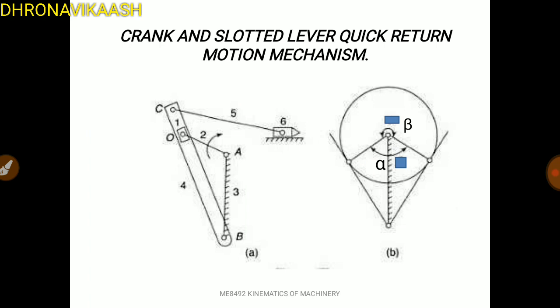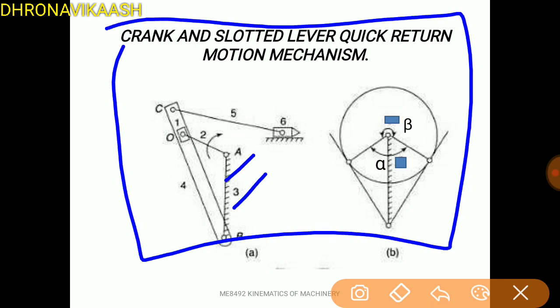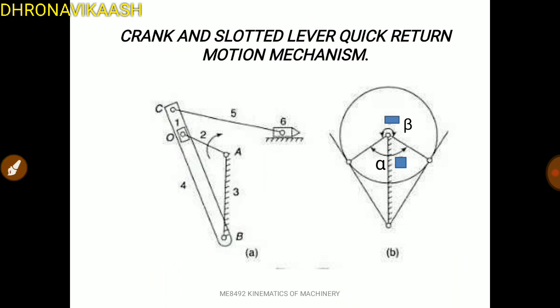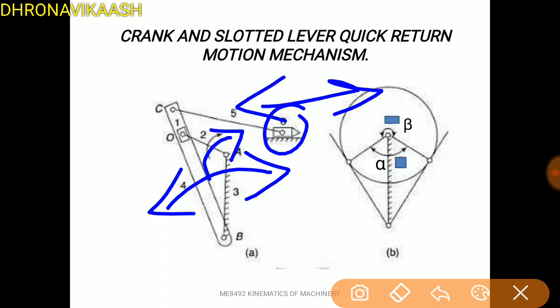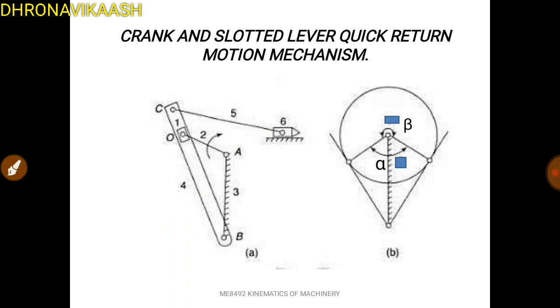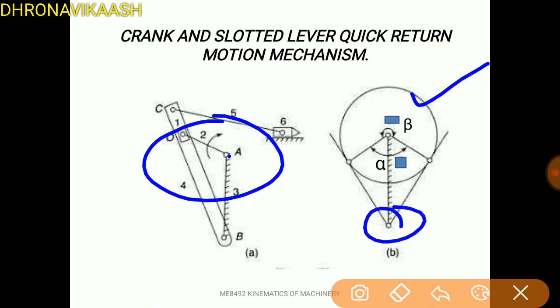Crank and slotted lever quick-return motion mechanism. Let's do the basics. This is the connecting rod, this is the crank, and this is the frame. The crank and slotted lever: the lever and slotted link provide front-and-back motion. This is the basic concept. We use this mechanism. Now, we use the extreme position. When you are tracing the crank circle, you can see a point and a tangent.